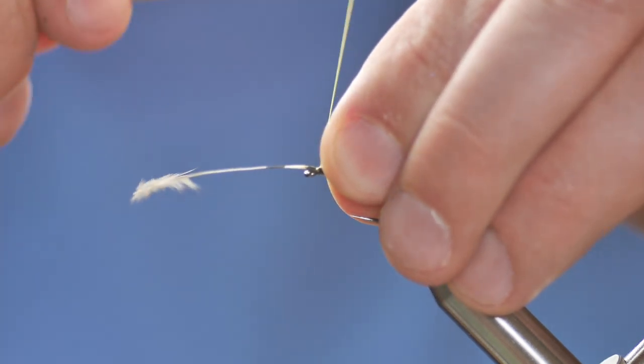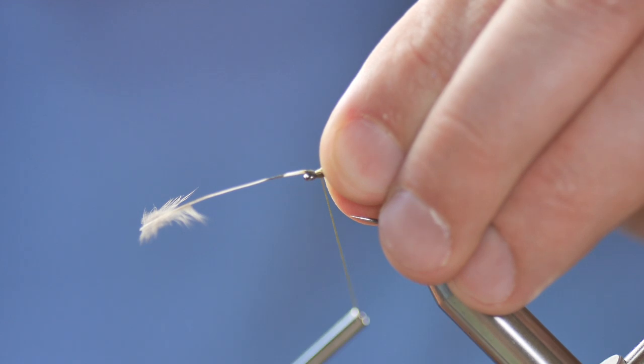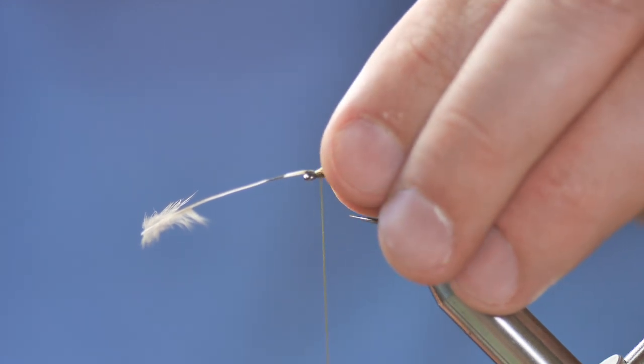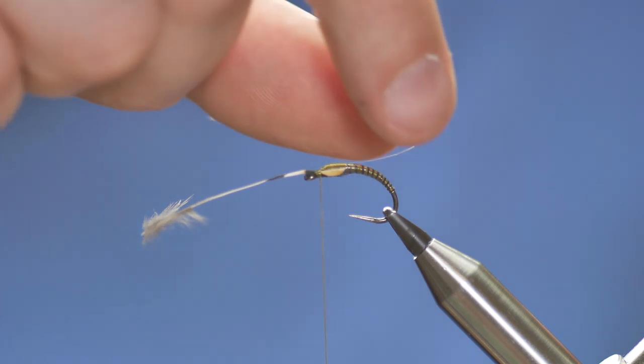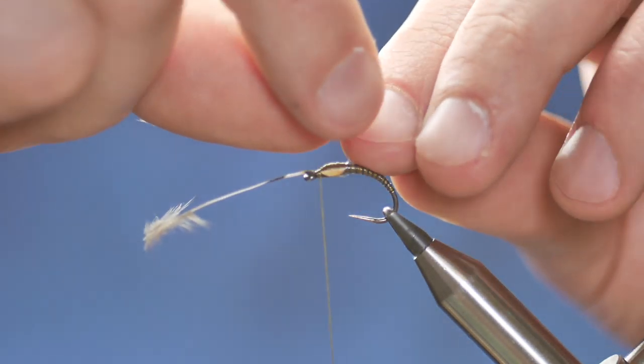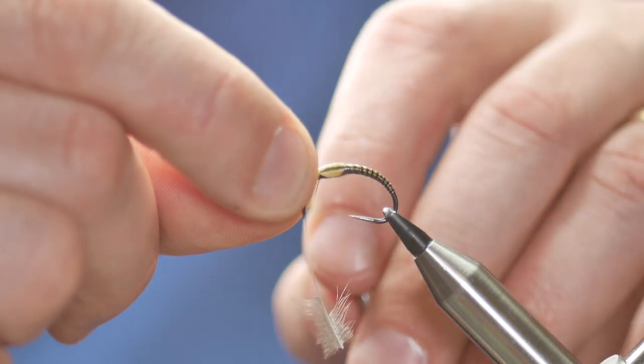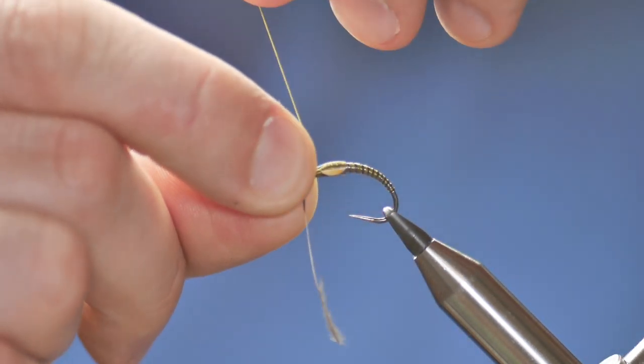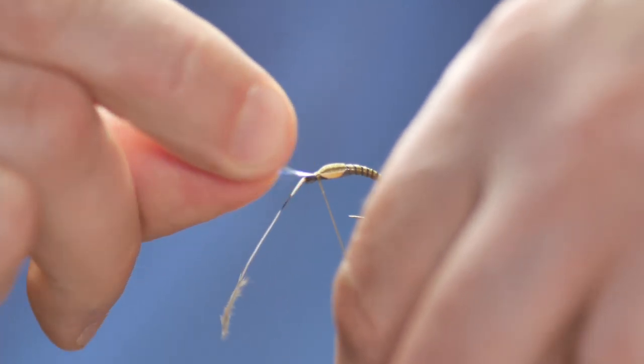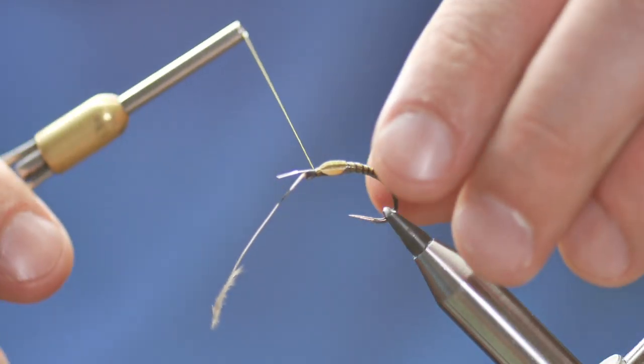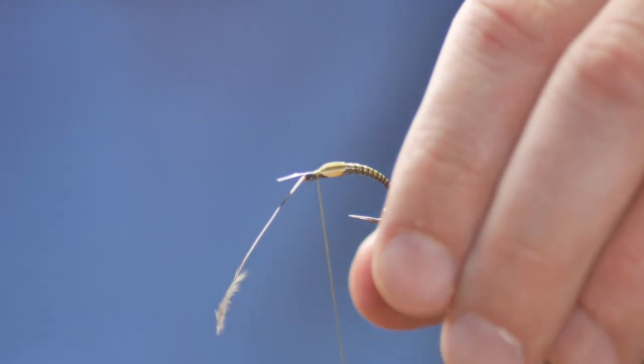I've caught that in and brought my thread over. Three wraps I've done there to hold it into place. Next I'm going to bring my thorax cover over and trap that in. That will only need one or two turns of thread.